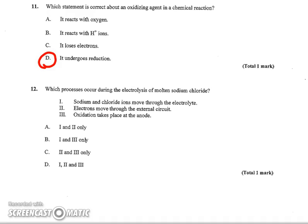And number 12, one more about molten sodium chloride. Which process occurs during the electrolysis of molten sodium chloride? Sodium chloride ions move through the electrolyte. That's true. The ions are moving 1 to the positive electrode and 1 to the negative. Electrons move through the external circuit. That's also true. And oxidation takes place at the anode. That's true because an anode is any oxidation. So D, all three of these would be true statements.